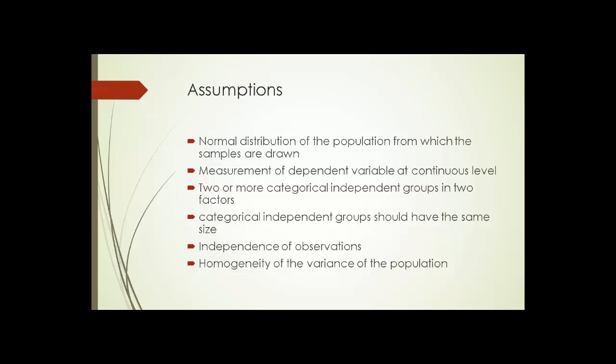The two-way ANOVA assumptions include a normal distribution of the population and measurement of dependent variable at a continuous level.